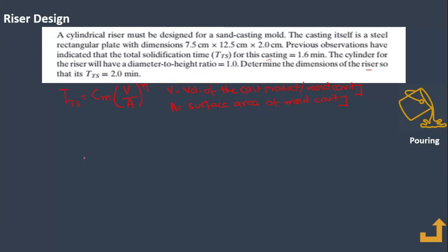We start by calculating the volume of the cast product. As given in the statement, it is 7.5 × 12.5 × 2, which equals 187.5 cm³.